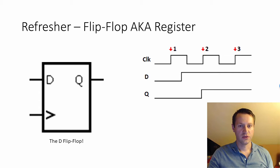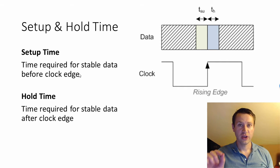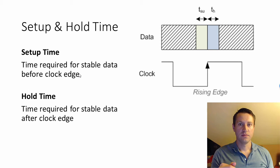All these things contribute to timing errors inside your design. The first thing that can contribute to that is setup and hold time. Setup time is the amount of time required for stable data before the clock — your data needs to be unchanging for that duration. Hold time is the time required for the data to stay stable after the clock. Setup time before the clock, hold time after the clock. If your data changes during setup time or hold time, you can potentially have a timing violation. That's a bad thing — don't do that.